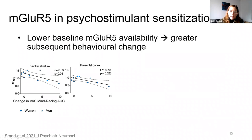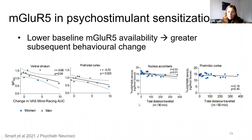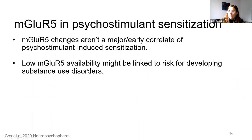Because we had skipped animal studies, we went back and did those experiments in parallel to make sure we weren't missing something. We gave mice four doses of amphetamine, saw behavioral sensitization, and then quantified mGluR5 in vitro postmortem. We saw the same thing — no change in mGluR5 in mice given amphetamine versus saline. But one thing we did find, unexpectedly, was that people who had lower mGluR5 at baseline were the ones who tended to show a larger subsequent behavioral change — greater sensitization — and this seemed to hold true in animals too.